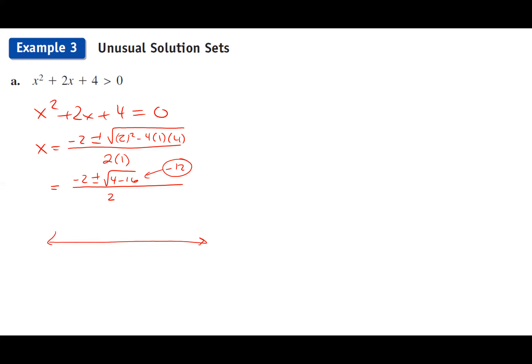Since there are no real zeros, the number line has no critical points — no dots at all. The only thing I need to test is a single point. Best choice: x = 0. Plugging in zero: 0 + 0 + 4 = 4, which is positive. That means this expression is positive throughout — from -∞ to +∞. The answer is all real numbers.